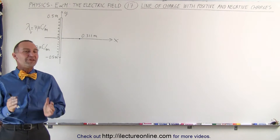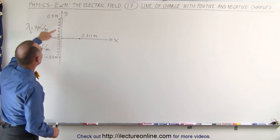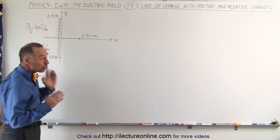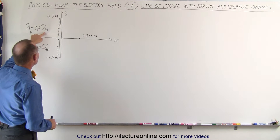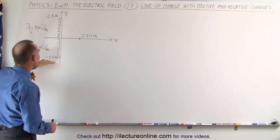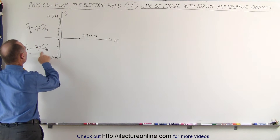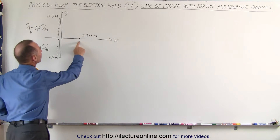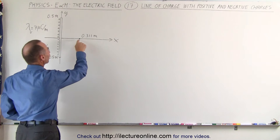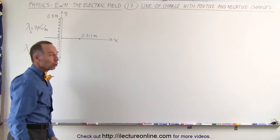Welcome to ElectronLine. What we have here is a line charge that goes from the origin to 0.5 meters above the origin with a linear charge density of seven microcoulombs per meter, and below the x-axis for half a meter from zero to minus 0.5 meters on the y-axis, a linear charge density of minus seven microcoulombs per meter. We have a point 0.31 meters from the origin in the x-direction, and we're trying to find the magnitude and direction of the electric field at that location.